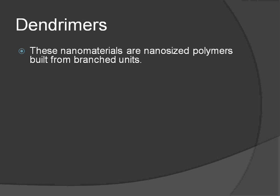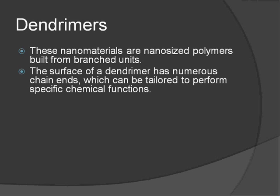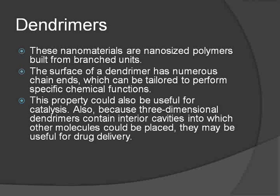Dendrimers can be defined as nano-sized polymers built from branched units. The surface of a dendrimer has numerous chain ends which can be tailored to perform specific chemical functions. This property can also be used for catalysis. Because their three-dimensional structure contains interior cavities into which other molecules could be placed, dendrimers may be useful for drug delivery.